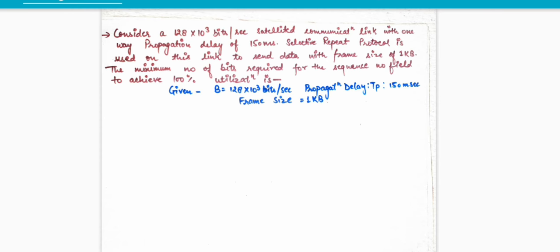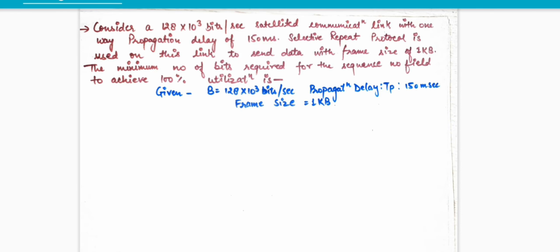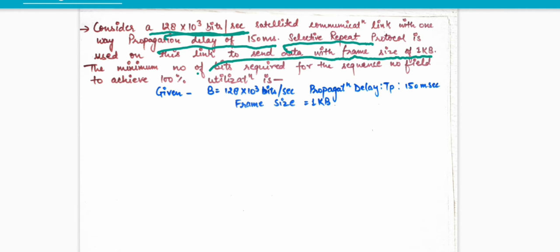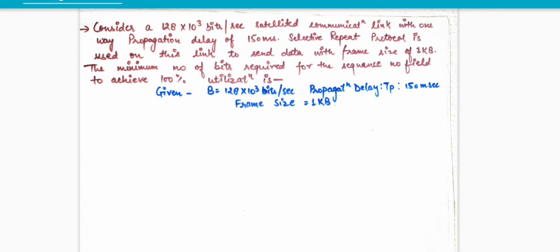Now let's come to the question. You are given: consider a 128 × 10³ bits per second satellite communication link with a one-way propagation delay of 150 milliseconds. So propagation delay is given and bandwidth is also given. Selective repeat protocol is used on this link to send data with a frame size of 1 KB. The question asks: what is the minimum number of bits required for the sequence number field to achieve 100% utilization?